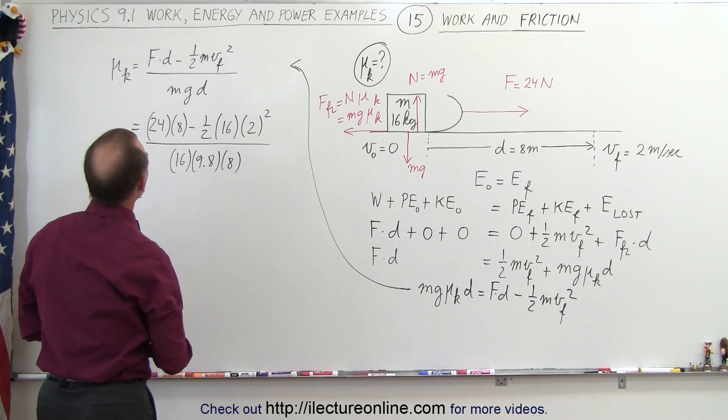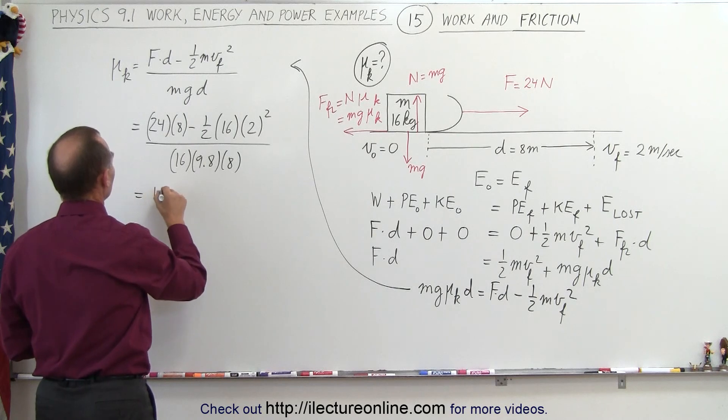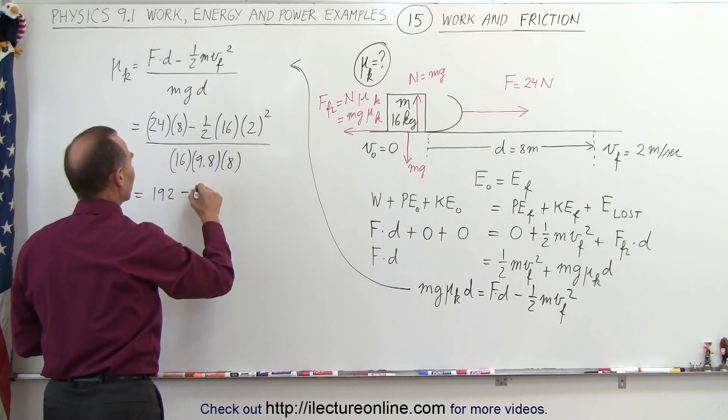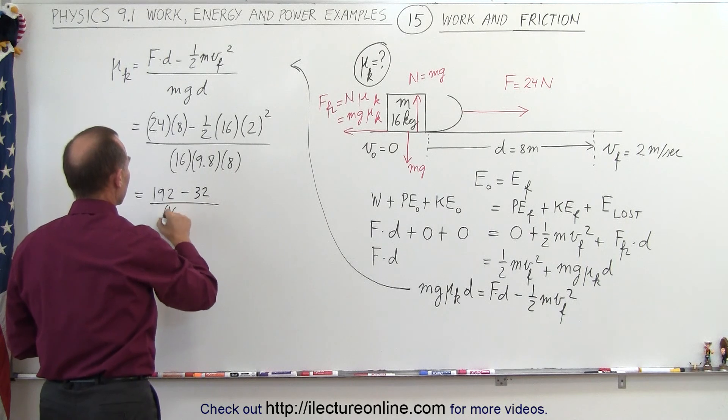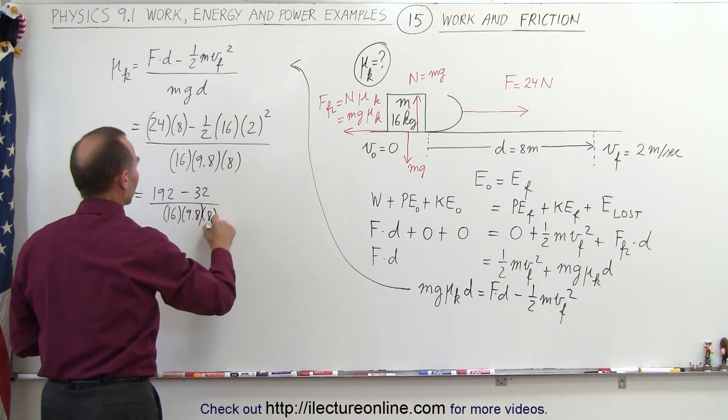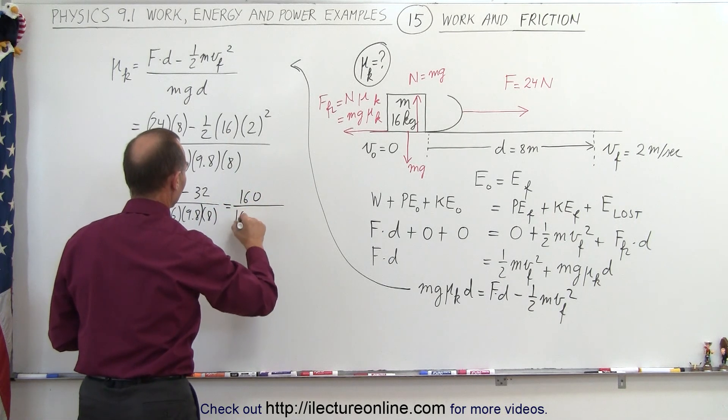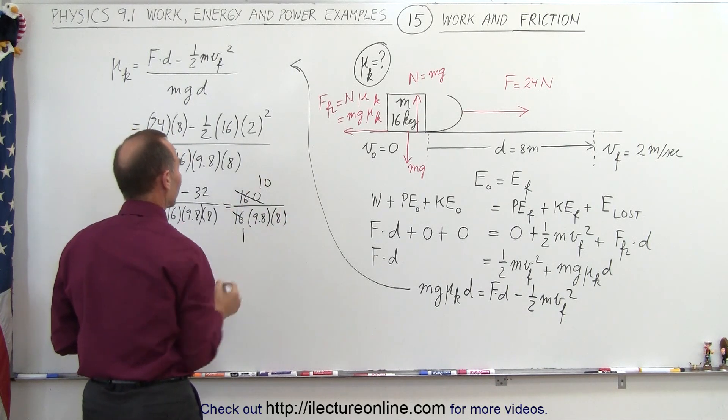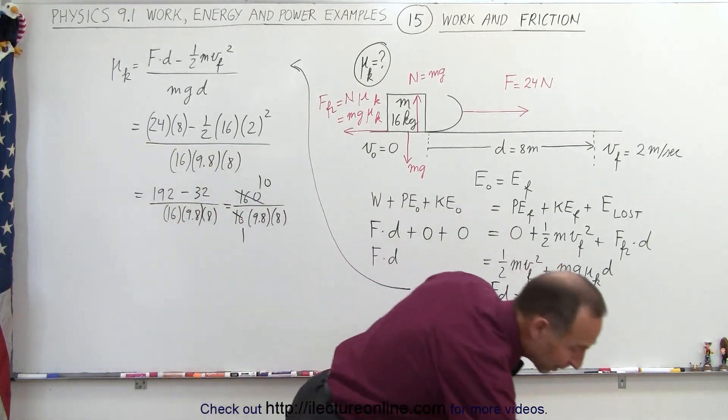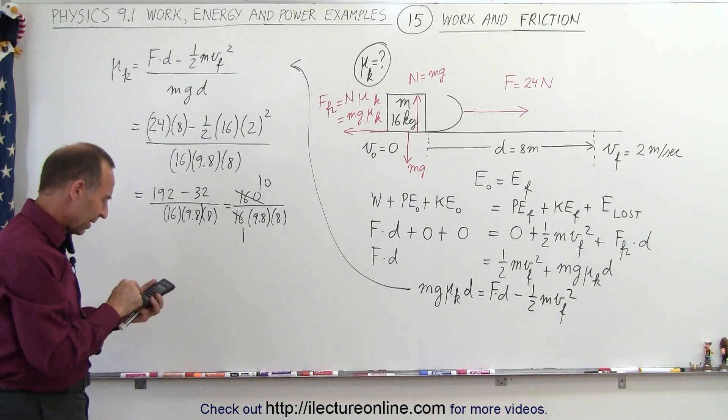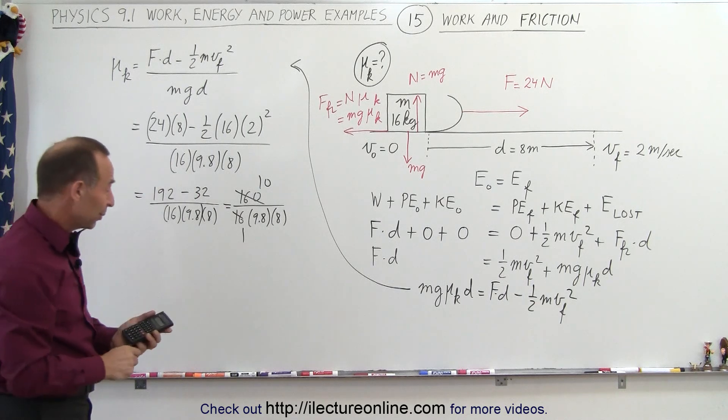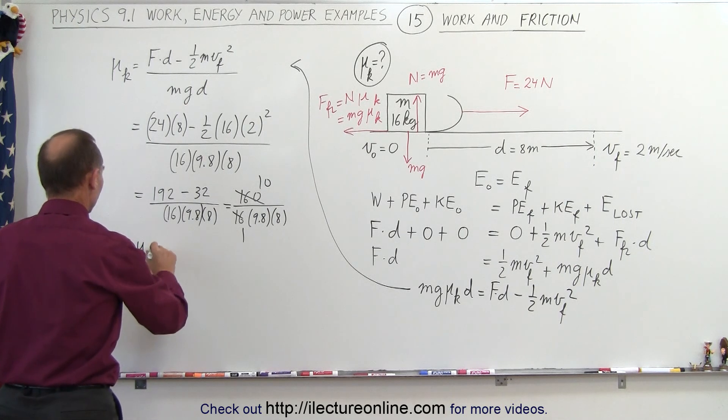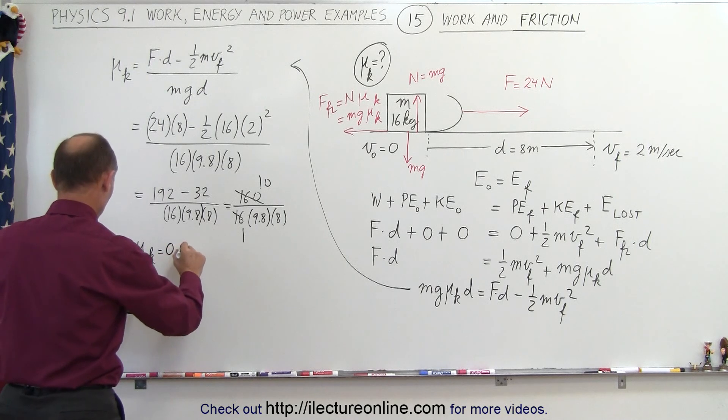So simplifying that a little bit, 8 times 24, that's 192. Minus 4 divided by 2 is 2, times 16 which is 32, divided by 16 times 9.8 times 8, which equals 160 divided by 16 times 9.8 times 8. And of course, the 16 and the 160 cancel out, that's 10 divided by 8. And now we'll just go ahead and grab a calculator. So 10 divided by 9.8 divided by 8 equals, we are getting a number between 0 and 1, that's always a good sign. And the coefficient of kinetic friction mu sub k is equal to 0.128.